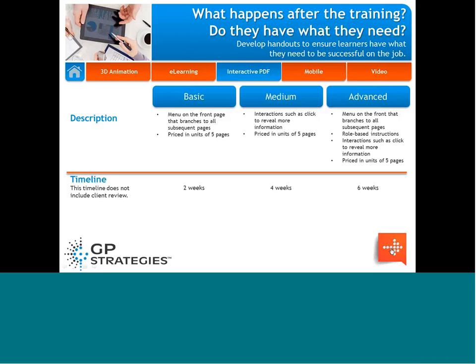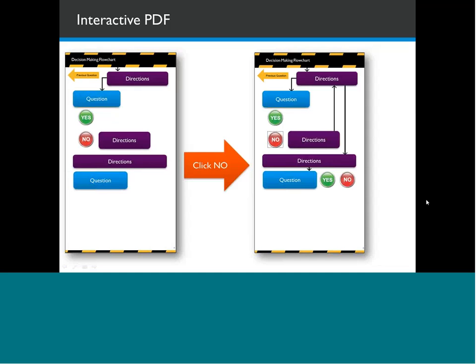Here's an example of what an interactive PDF could look like. On the left-hand side there are directions at the top and a question listed below. The learner clicks yes or no, and based on what they click, they get more information. It begins to fill out answers and ask continued questions. So instead of a big diagram they have to follow through, it allows them to drive to the answer they need. This is just one example of how you could take a lengthy procedure and e-learning can solve a realistic problem.